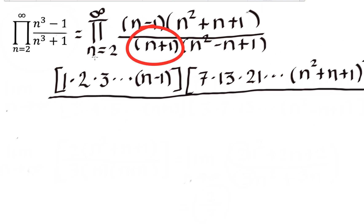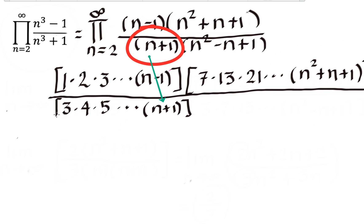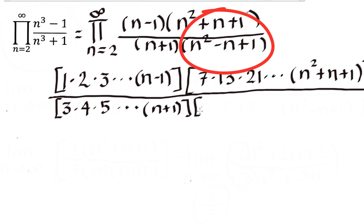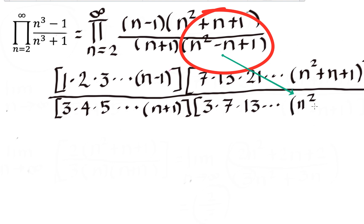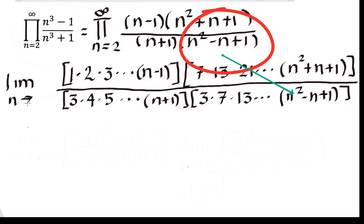For the denominator: the first factor gives n plus 1, so if n equals 2 it's 3; if n equals 3 it's 4 — continuing until n plus 1. For the second factor: if n equals 2, that's 4 minus 2 plus 1 equals 3; if n equals 3, that's 9 minus 3 plus 1 equals 7; if n equals 4, that's 16 minus 4 plus 1 equals 13 — continuing until n squared minus n plus 1. And we want the limit as n approaches infinity.